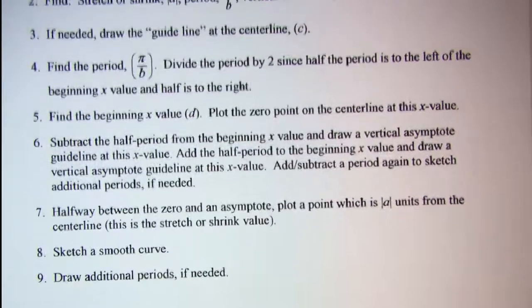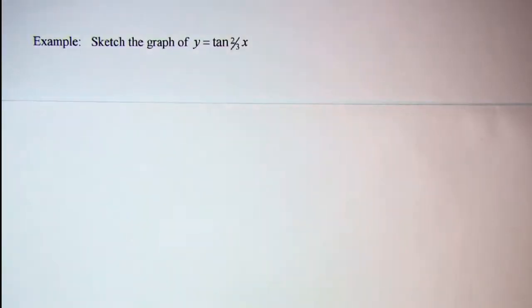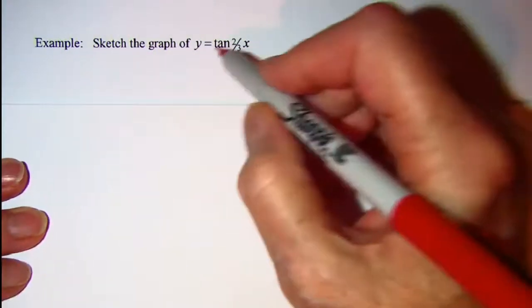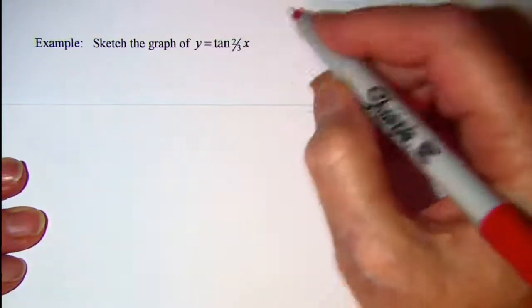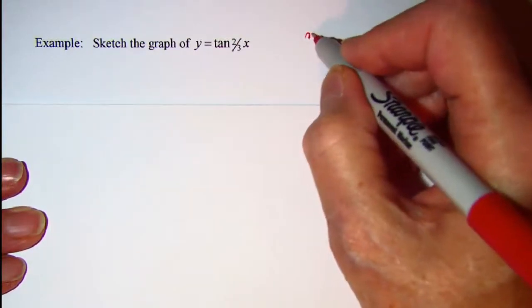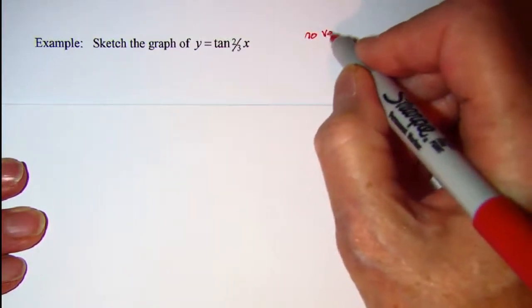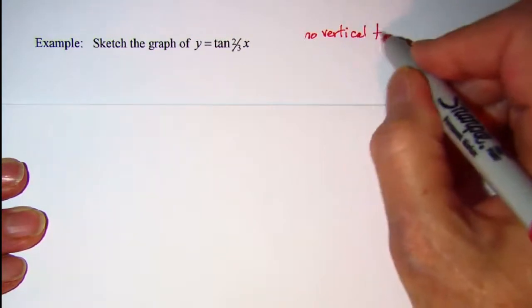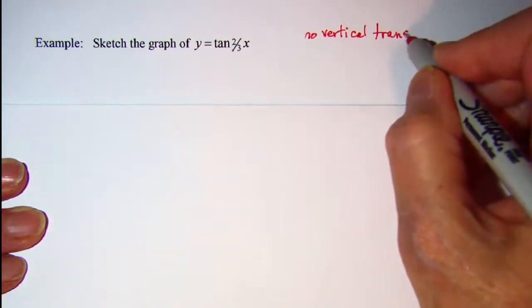Let's do an example. In our example we are asked to sketch the graph of y equals tangent two-thirds x. Now we see that no number is added on here so we have no vertical translation, so we are not moving it up or down any.